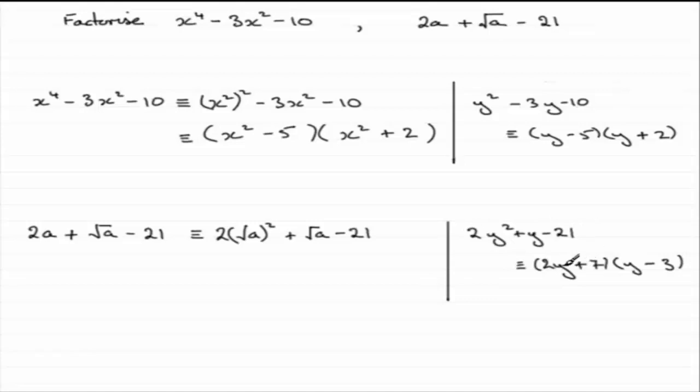So wherever there was a y, y was the square root of a. So in other words, this can be reduced down to two brackets. And we've got 2y, 2 root a plus the 7. And then y minus 3. So that becomes y was root a minus 3. So we have a quadratic expression in root a which can be factorized.